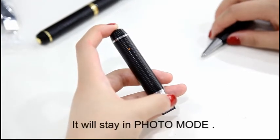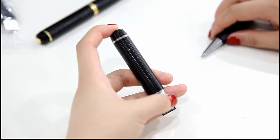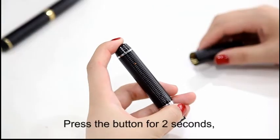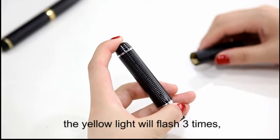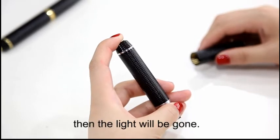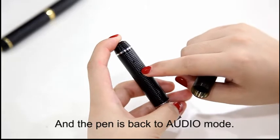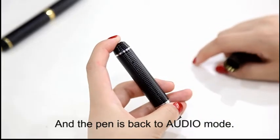It will stay in photo mode. Press the button for two seconds. The yellow light will flash three times, then the light will be gone. And the pen is back to audio mode.